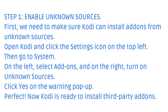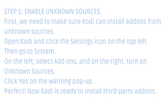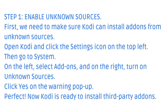Step 1: Enable Unknown Sources. First, we need to make sure Kodi can install add-ons from unknown sources. Open Kodi and click the Settings icon on the top left, then go to System. On the left, select Add-ons, and on the right, turn on Unknown Sources. Click Yes on the warning pop-up. Now Kodi is ready to install third-party add-ons.